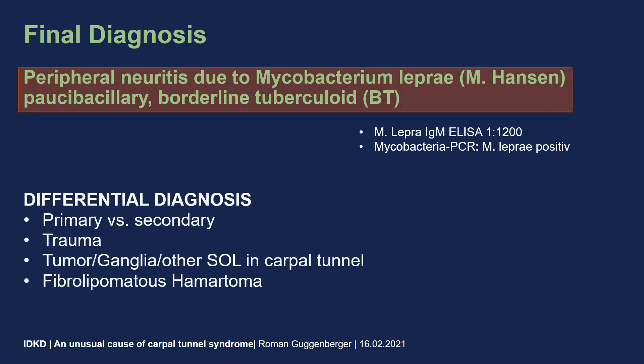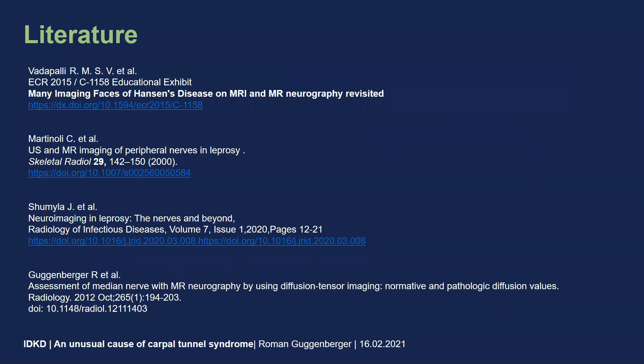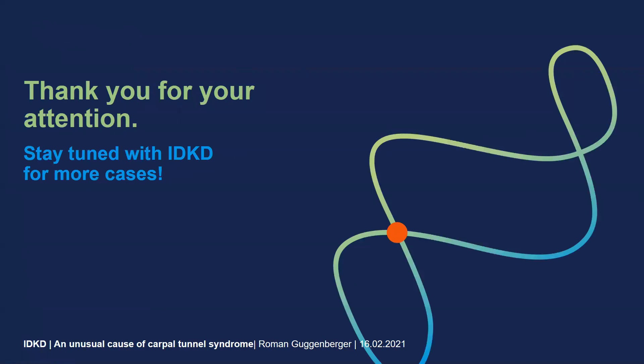As we've discussed, differential diagnosis of carpal tunnel syndrome would include secondary forms like trauma, tumor, ganglia or other space-occupying lesions in the carpal tunnel, or maybe a fibrolipomatous hamartoma of the median nerve itself, especially if you have an ultrasound image that looks like the one we've seen in this patient. I hope you enjoyed this case. If you're interested in further literature, please have a look at these publications that I also used for my presentation. With this, I leave you with best wishes from Zurich. Thank you very much.